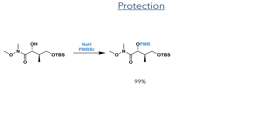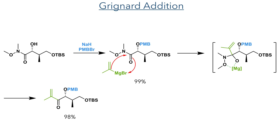The secondary hydroxyl group was then protected using PMB bromide, and they then carried out a Grignard addition to the Weinreb amide. Isopropenyl magnesium bromide adds to the Weinreb amide forming an alkoxide intermediate, which can coordinate to the magnesium. The complex is stabilised by further coordination to the N-methoxy group and is stable at low temperatures, hydrolyzed upon quenching. This allows only a single addition to occur, as typically the alkoxide intermediate would collapse and a second addition into the ketone would occur.